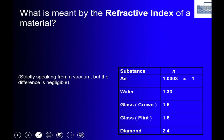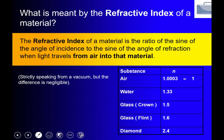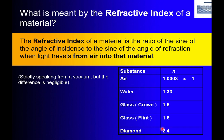The refractive index n is a measure of how much the material can bend or refract light. The refractive index of air is roughly 1, water is around 1.33, glass varies from 1.5 to 1.6, and diamond is 2.4. Diamond can bend light the most, while water bends it the least.